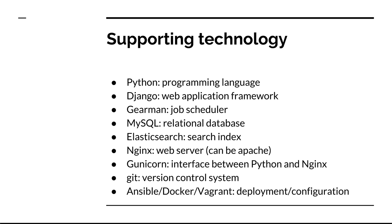Next I want to talk about the supporting technologies. Archivematica is built on open source tools, and these are some of the main tools that we use. We use Python programming language, Django — which is a web application framework built on Python. We use Gearman for scheduling jobs. We use MySQL as the relational database. We use Elasticsearch as our search index. We use Nginx as our web server, and Gunicorn, which is an interface between Python and Nginx.